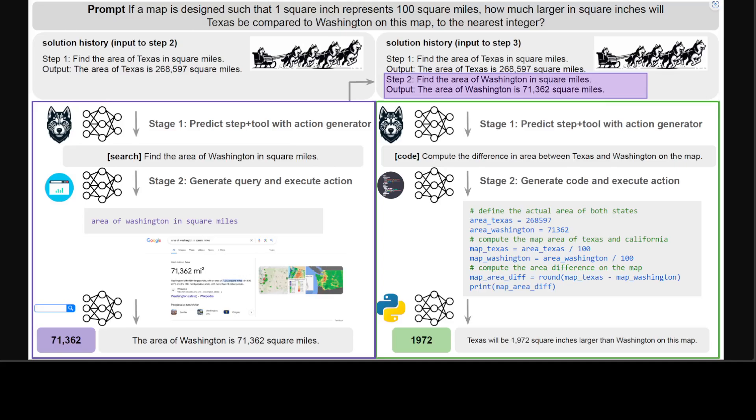Husky solves a multi-step task for numerical, tabular, and knowledge-based reasoning by jointly predicting the next high-level step and tool with an action generator, and then executing the action with the assigned expert model. This process repeats until it arrives at the final answer.